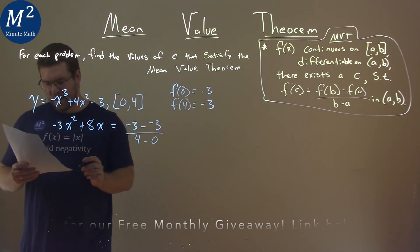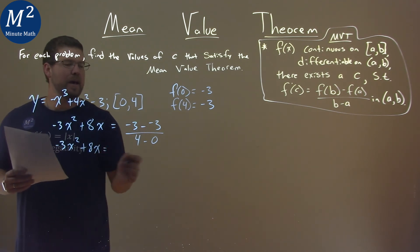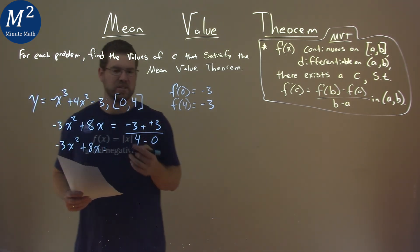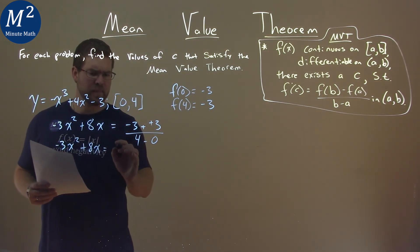Let's simplify this. We have -3x² + 8x, and minus a negative 3 is plus a positive, but then we get 0. -3 + 3 = 0, and 0 divided by anything is 0, so we have 0 here.